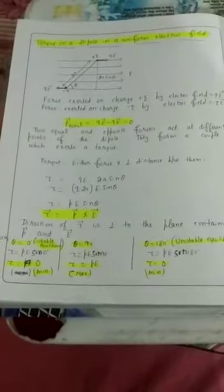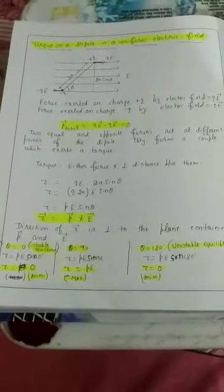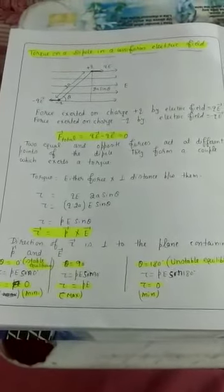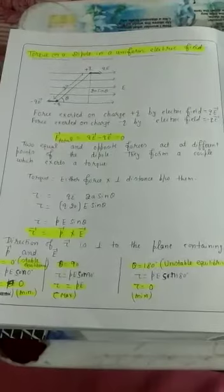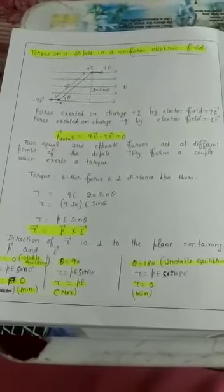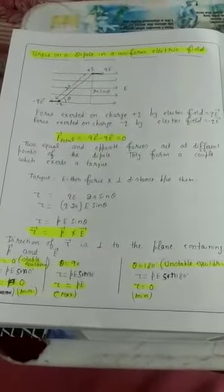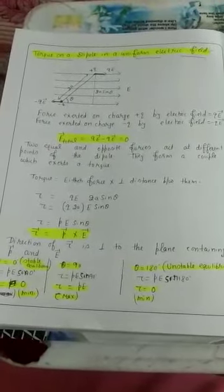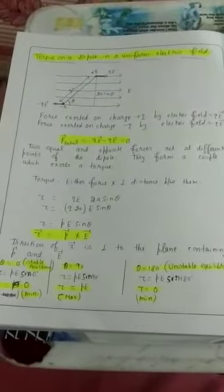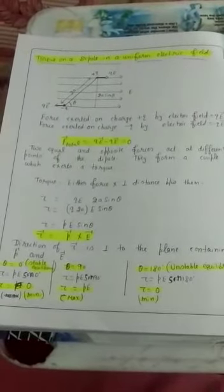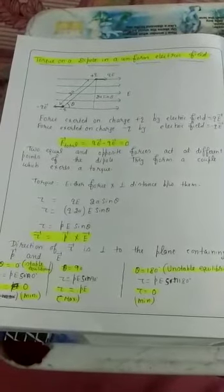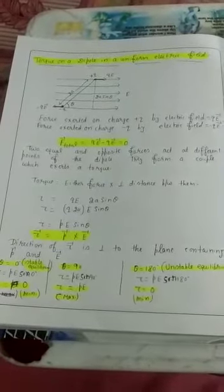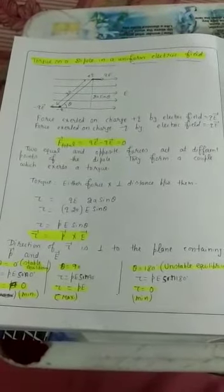Good morning everyone. Today's topic is torque on a dipole in a uniform electric field. A dipole is a system having equal and unlike charges separated by some distance. A uniform electric field is one where the strength of the electric field is the same throughout a region of space.